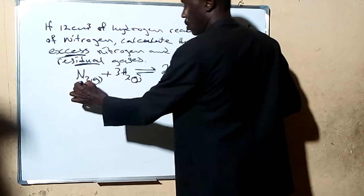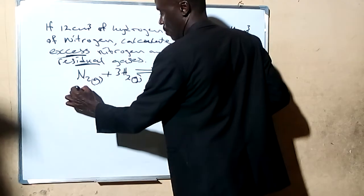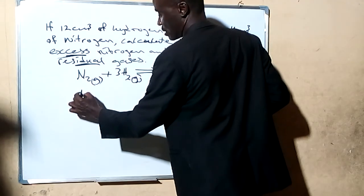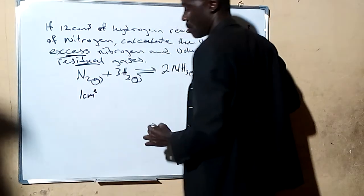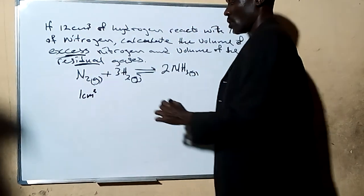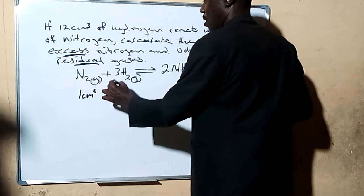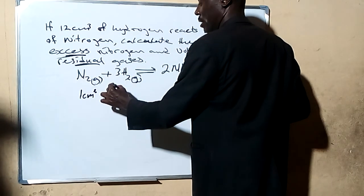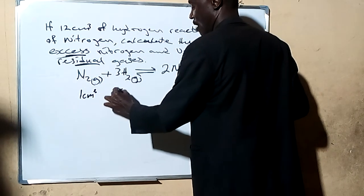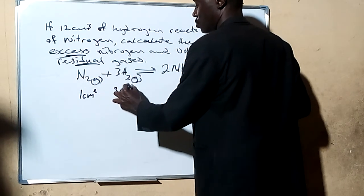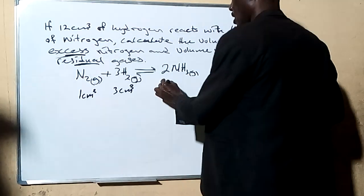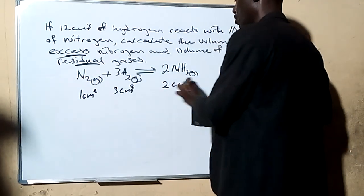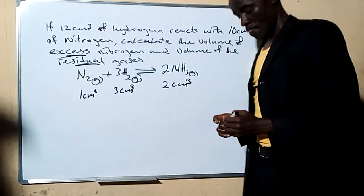In other words, looking at the equation, we have 1 cm³ of nitrogen — that's according to the law. Then we have 3 cm³ of hydrogen, and here we have 2 cm³ of ammonia.